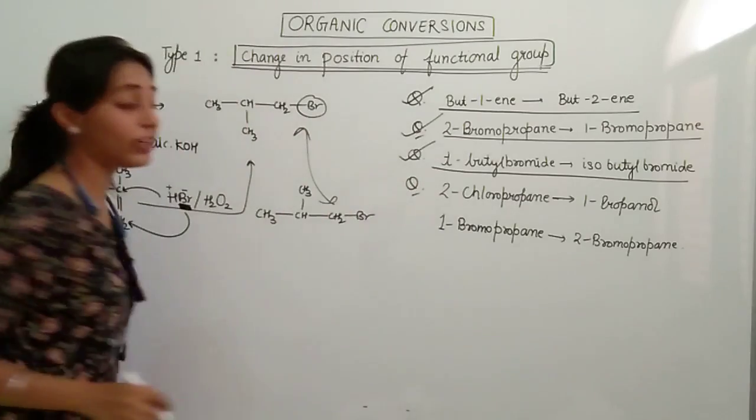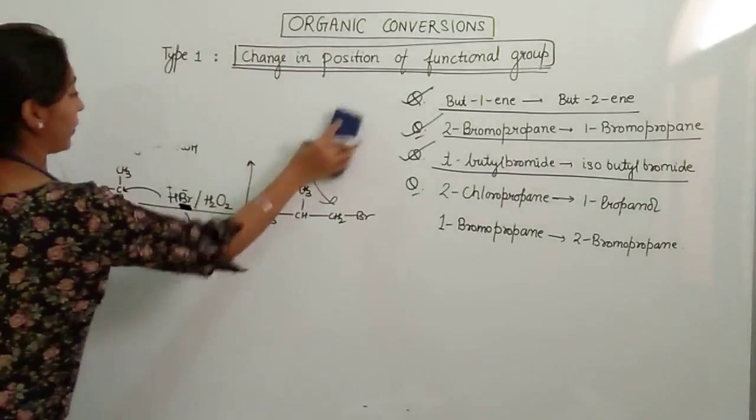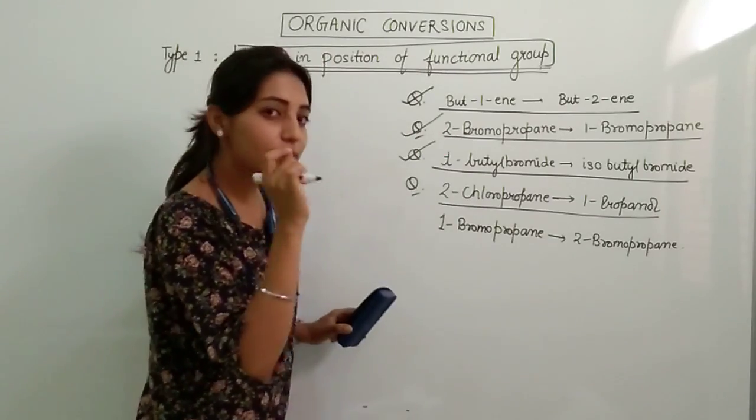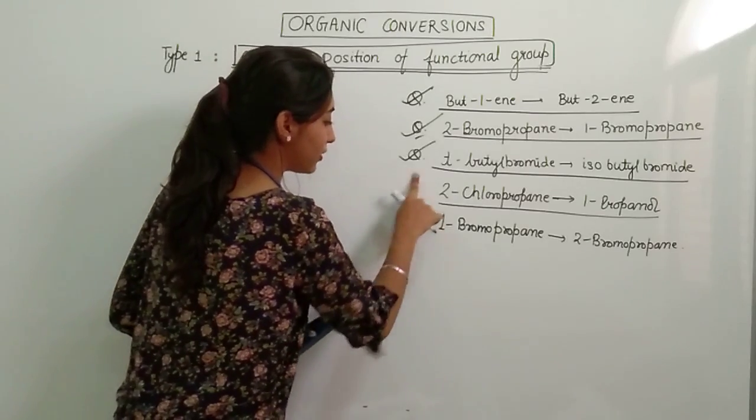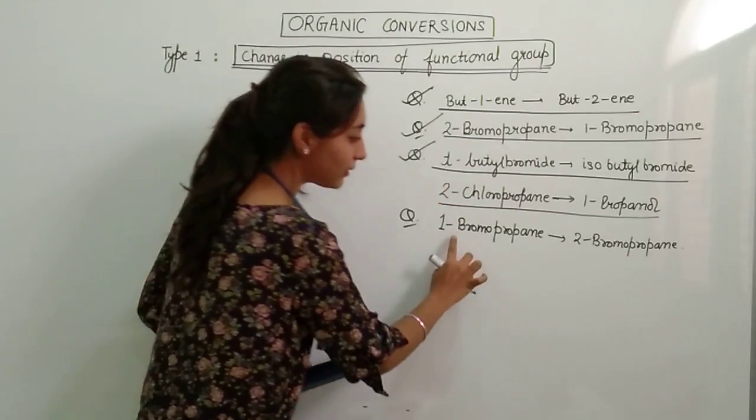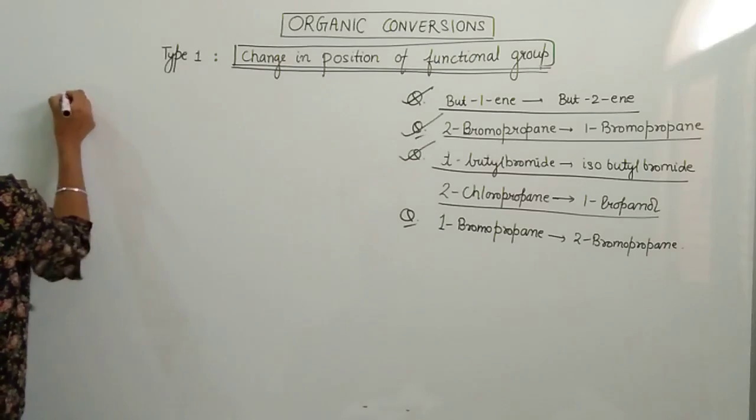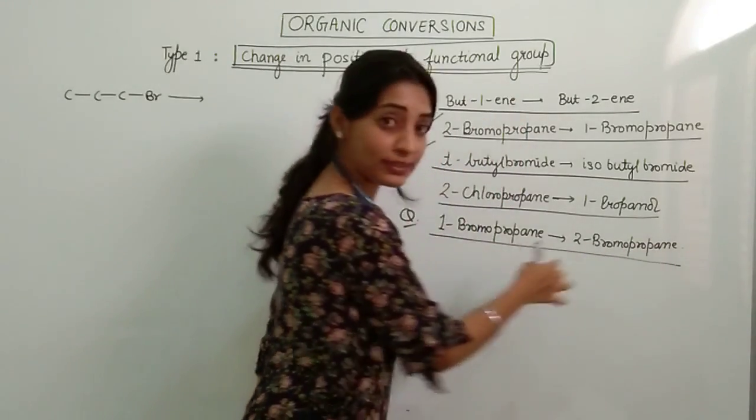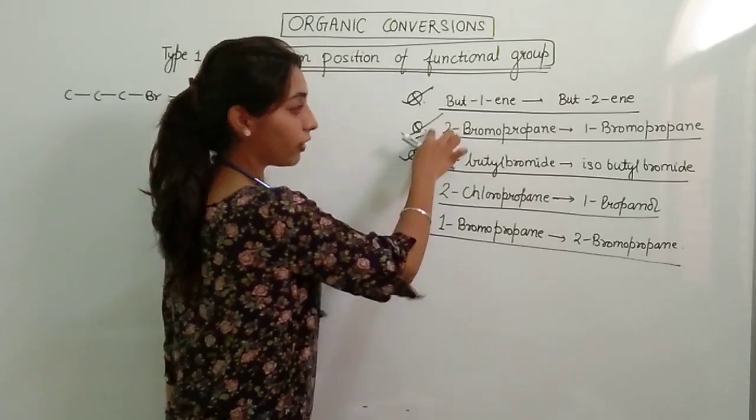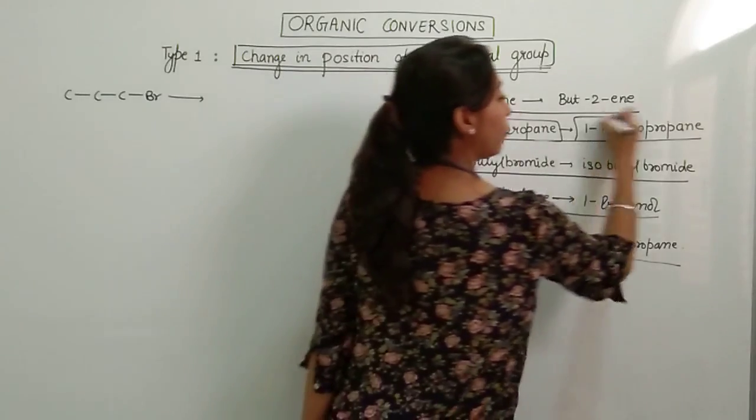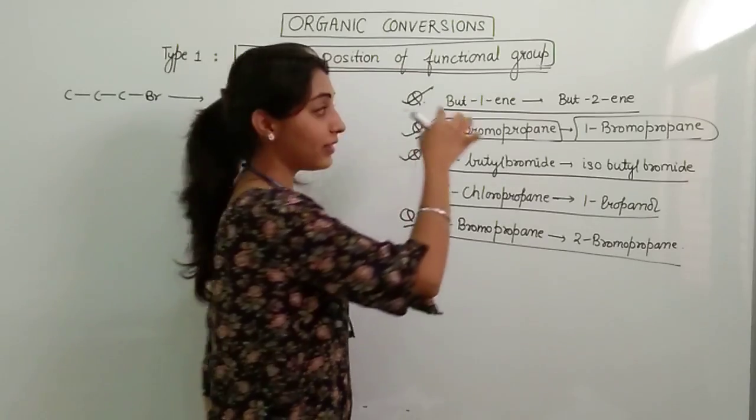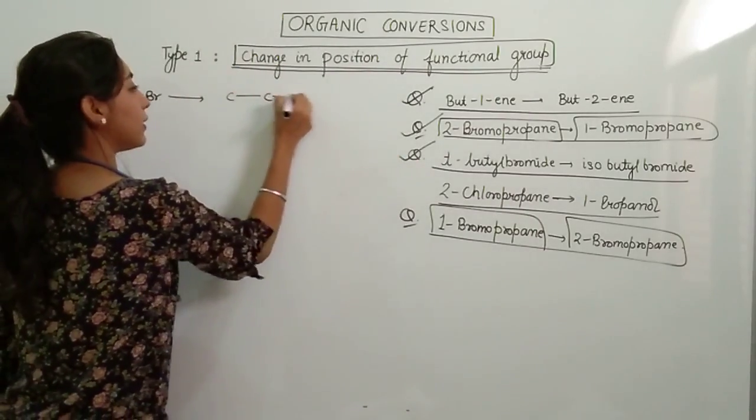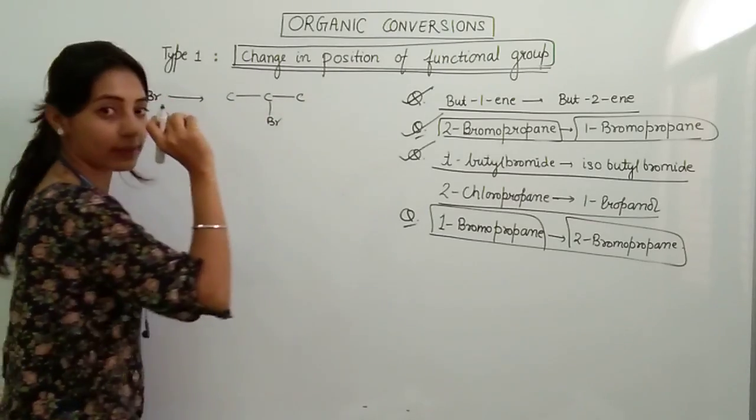Let's move to another question. This is 1-bromopropane and we have to convert it to 2-bromopropane. See this is just opposite of earlier question. Earlier we did 2-bromopropane to 1-bromopropane. Just pause the video, go back and see how we did it. And now we have to do 1-bromopropane to 2-bromopropane. Let me draw the structure. Number of carbon atoms same, only the change in the position of functional group.